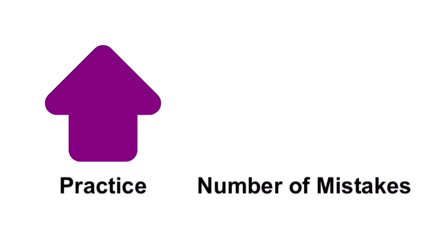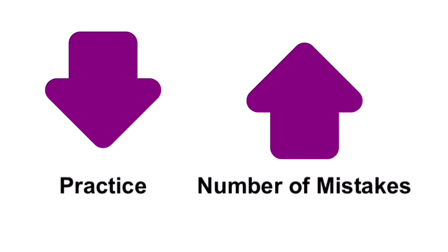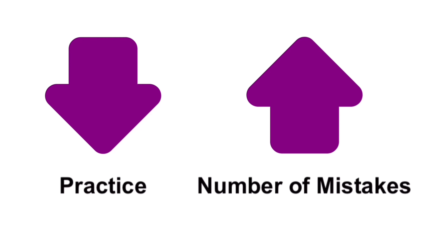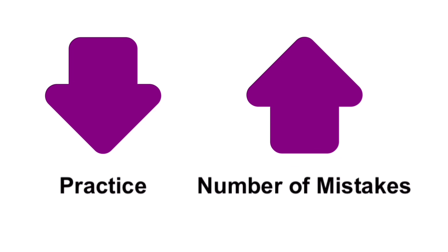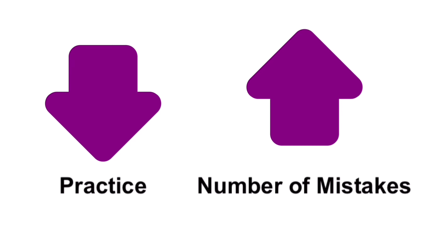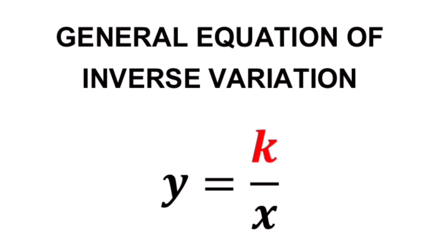Now let's look at another example. Practice and number of mistakes are inversely proportional to each other, which means that the more we practice, the fewer mistakes we commit. On the other hand, the less we practice, the more mistakes we make — or we get a greater probability of committing mistakes with less practice. So these two are inversely proportional to each other.